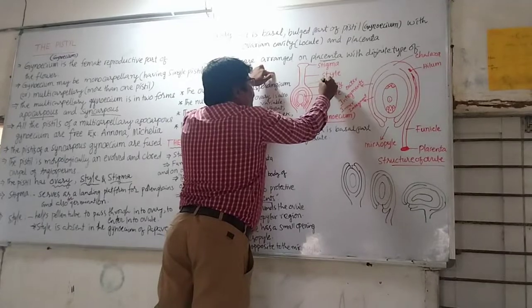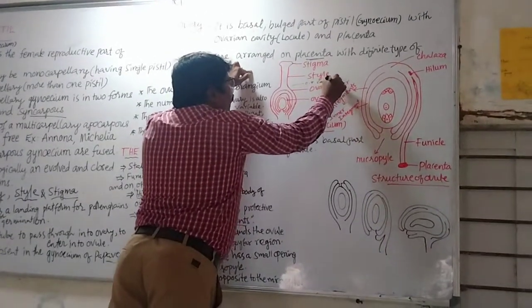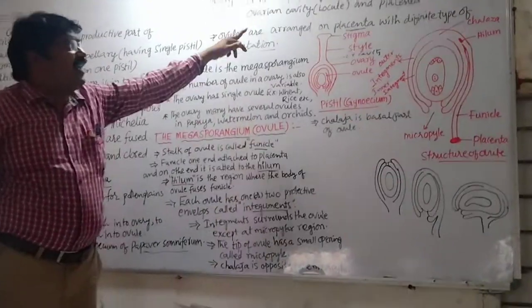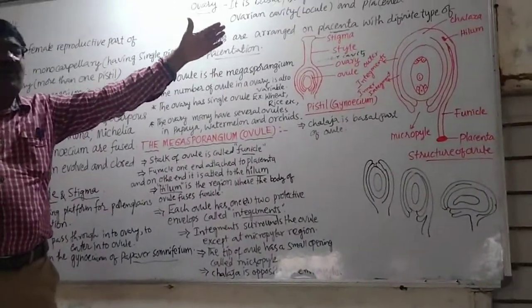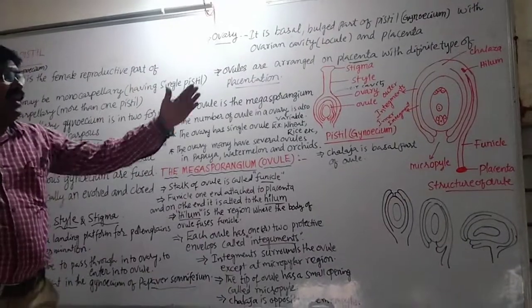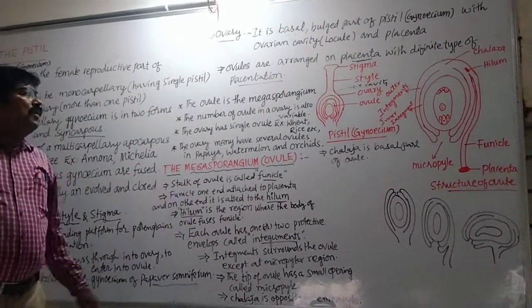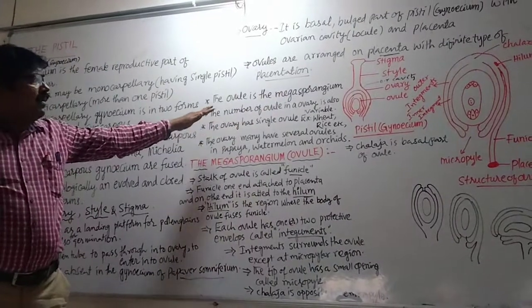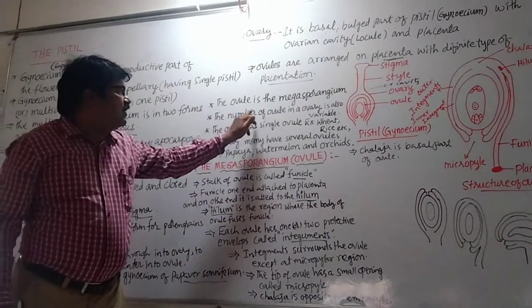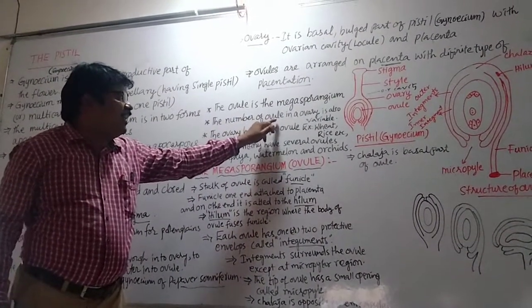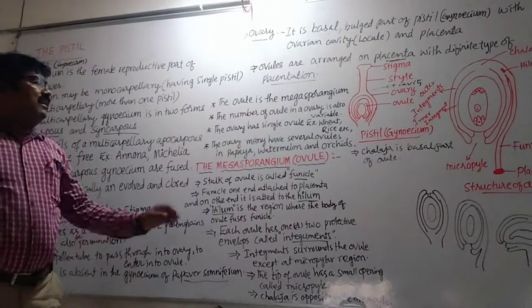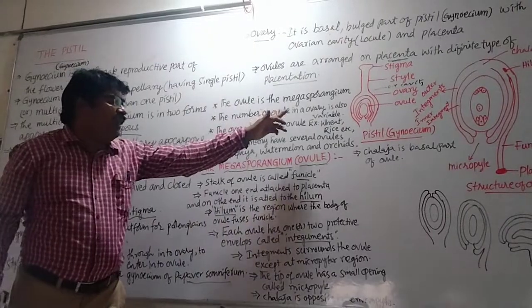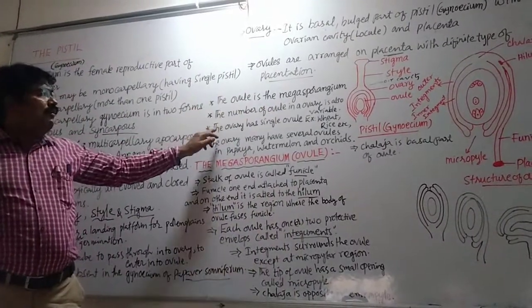And also ovules are arranged on placenta, with definite types of placentation. The ovary is the megasporangium. The number of ovules arranged in ovary is variable.